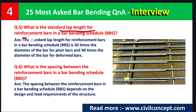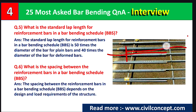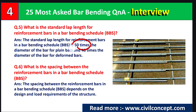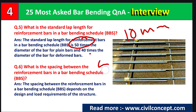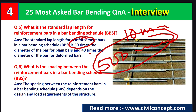Question number five: what is the standard lap length for reinforcement bars in bar bending schedule? When one rod comes from one side and another from the other side, there is some lapping between the rods. The standard lapping length is 50 times the diameter of the bar for plain bars, and 40 times the diameter for deformed bars. For example, for a 10 mm rod, the lapping length must be 50 × 10 = 500 mm.